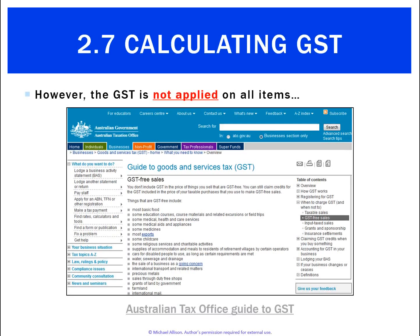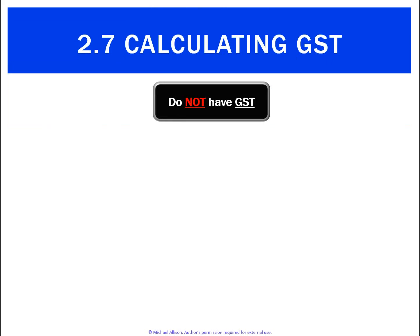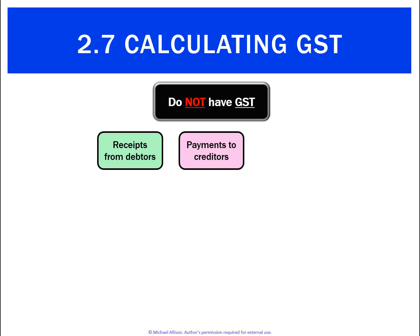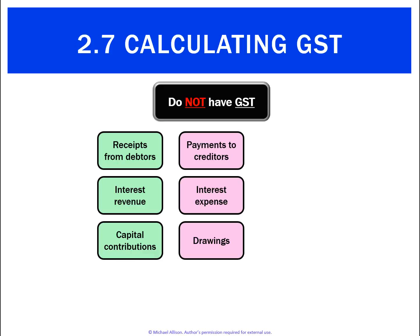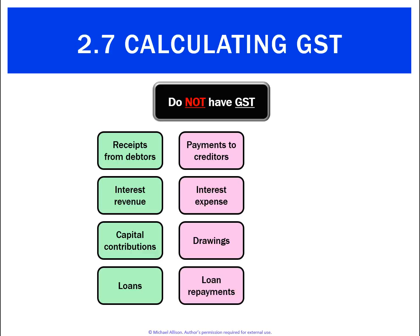However, the first thing we want to realize is that some items actually don't have GST. If you go to the tax office website, there is a list of items that are GST free. For our purposes in Year 12 VCE accounting, we're going to assume the following things don't have GST: receiving money from a debtor or paying money to a creditor, interest revenue or interest expense, capital contributions and drawings, loans and repaying loans, and any wages.